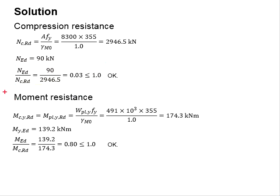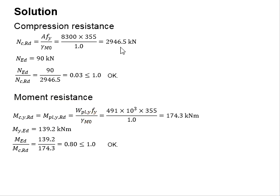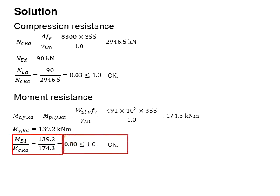For the moment resistance, use the equation that is a function of section modulus times yield strength divided by the factor of safety. The moment resistance is then compared with the moment load and is found to be greater. Therefore, the moment resistance is considered acceptable.